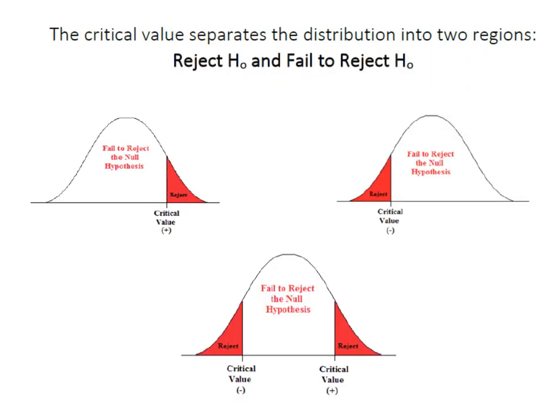Remember that the critical value separates your distribution into two regions, a reject or a fail to reject region. In the case of a one-tailed right test, in which case we would have had an HA that looked like greater than, then our critical value would be here, with our rejection region in the upper tail of the curve.